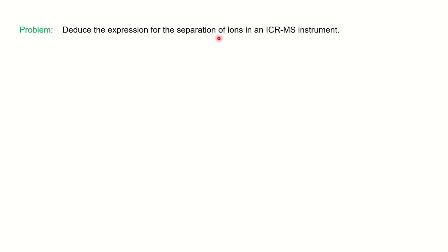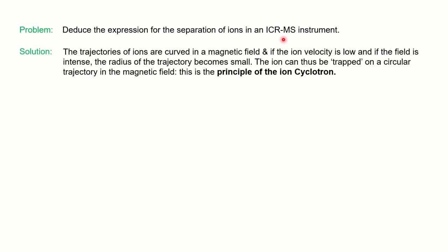First we will see the principle of Ion Cyclotron Resonance. The trajectories of ions are curved in the magnetic field. If the velocity of the ion is low and the field is intense, the radius of the trajectory becomes small, and the ions are thus trapped on a circular trajectory in the magnetic field.